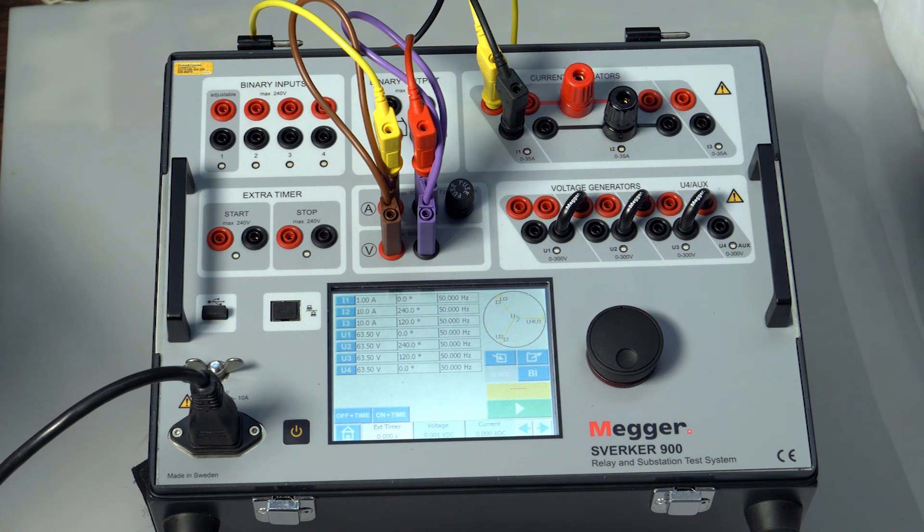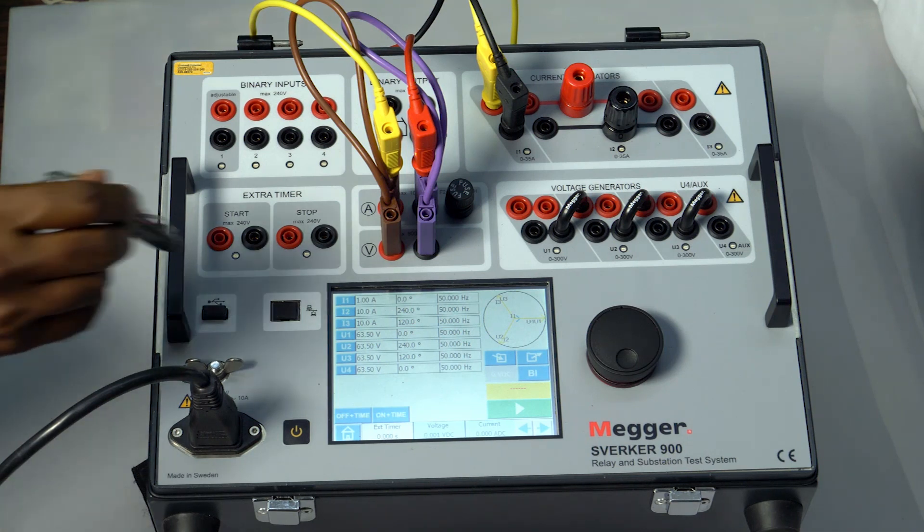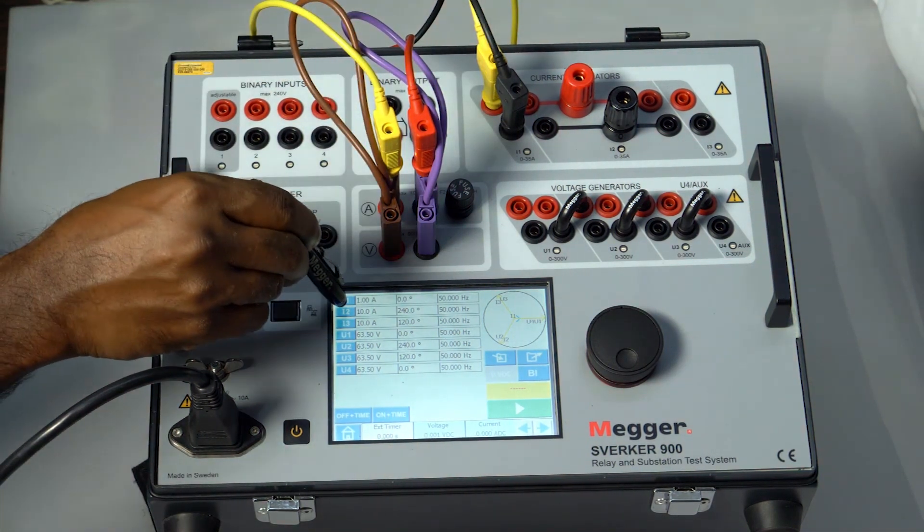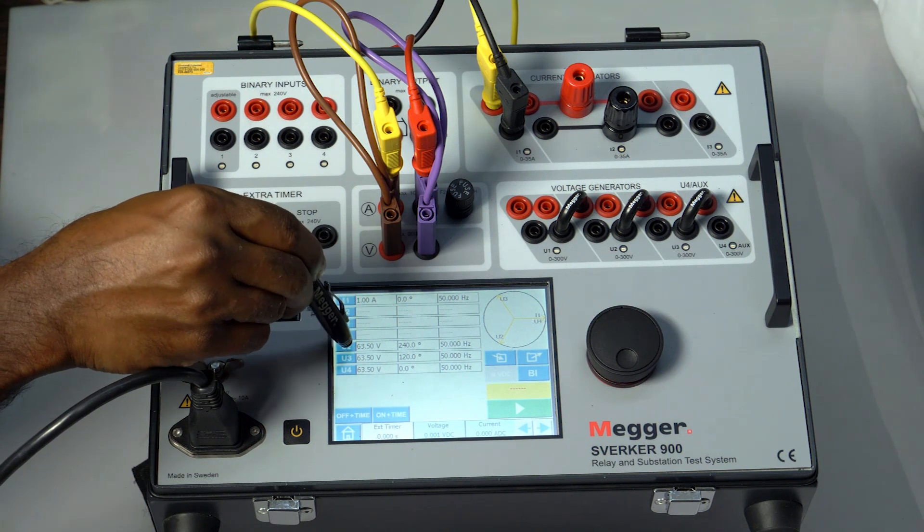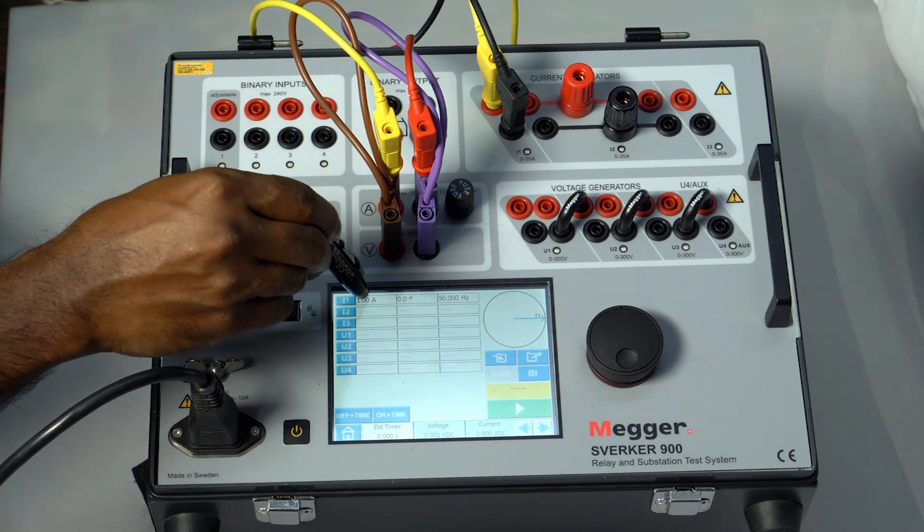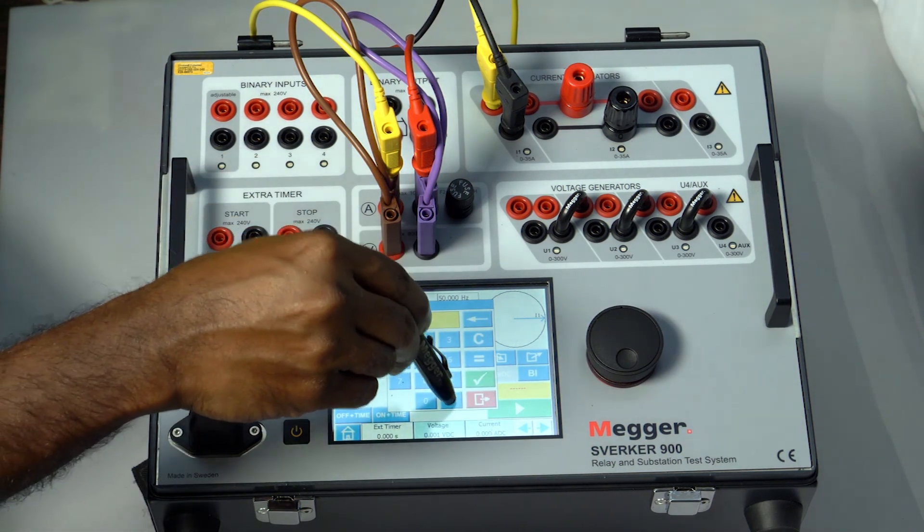Inject 10% of the rated CT secondary in DC. 0.1 amps is 10% for a 1 amp CT secondary. We have connected only to the R phase of the test kit, so let me turn off all the other sources and inject 0.1 amps DC.